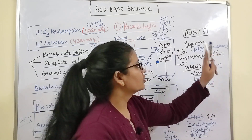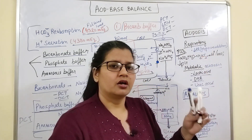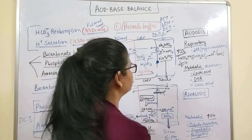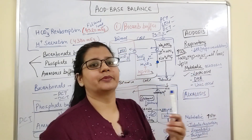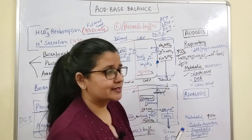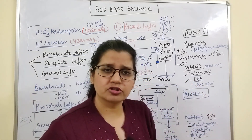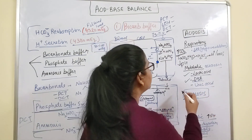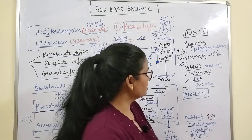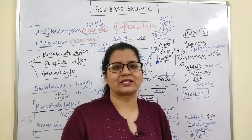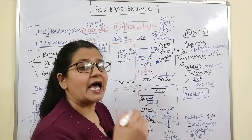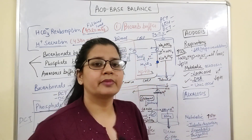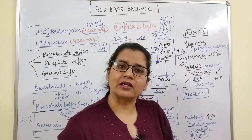Metabolic acidosis is not due to CO2 accumulation but due to acid collection from metabolic processes. Examples include lactic acid accumulation during exercise with insufficient oxygen, diabetic ketoacidosis, and uric acid accumulation. In these conditions, H+ concentration increases and pH reduces — this is metabolic acidosis.